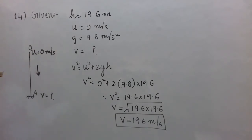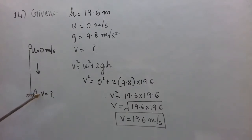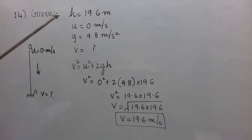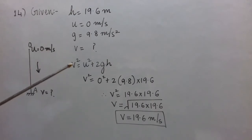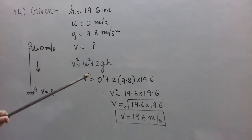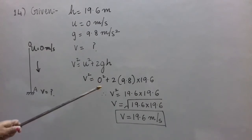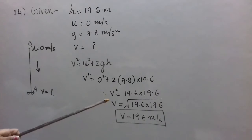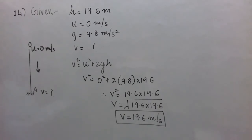We have to find the final velocity v just before touching the ground. Time t is not given, so we use the third equation of motion: v² = u² + 2gh. Putting the values — u is 0, g is 9.8, h is 19.6 — v² equals 19.6 × 19.6. Taking the square root, the final velocity is 19.6 meter per second.